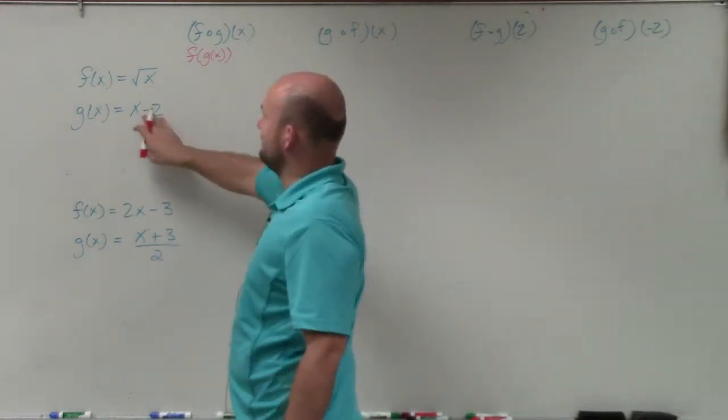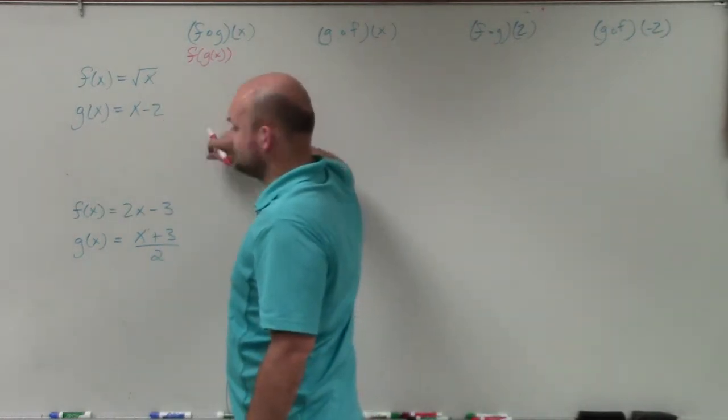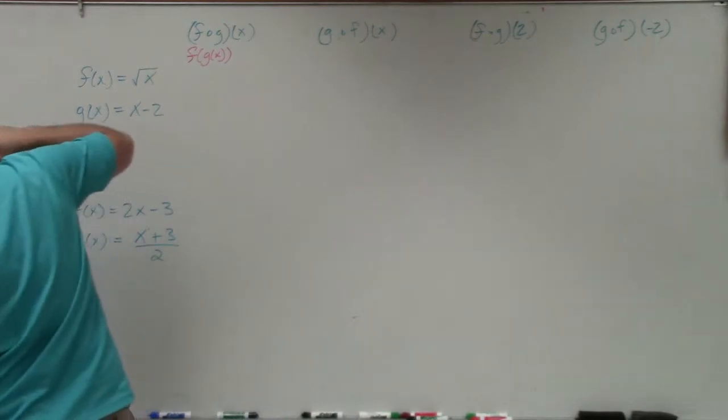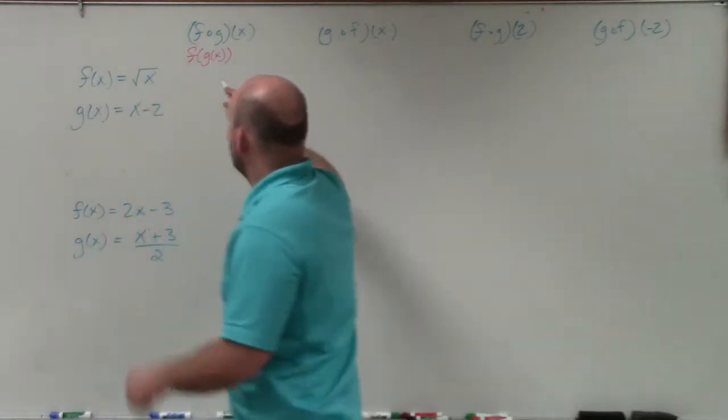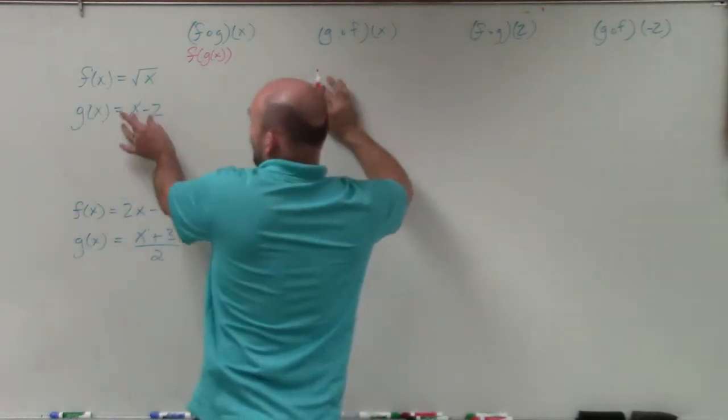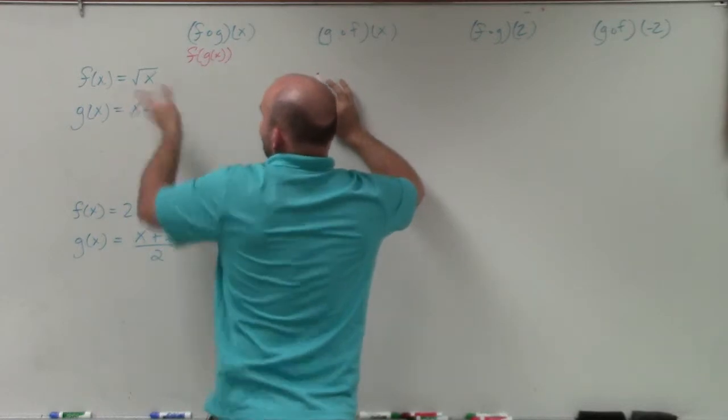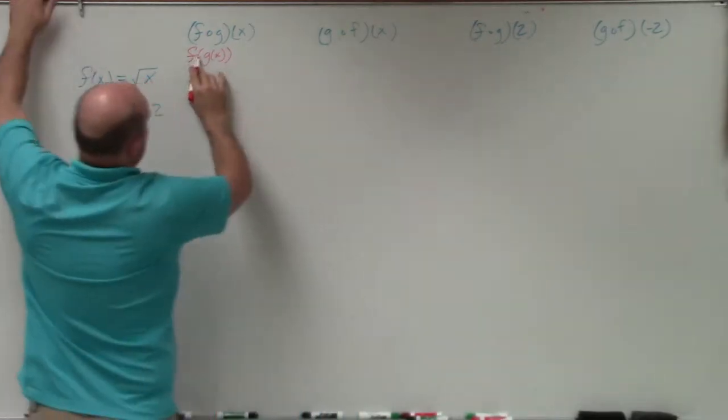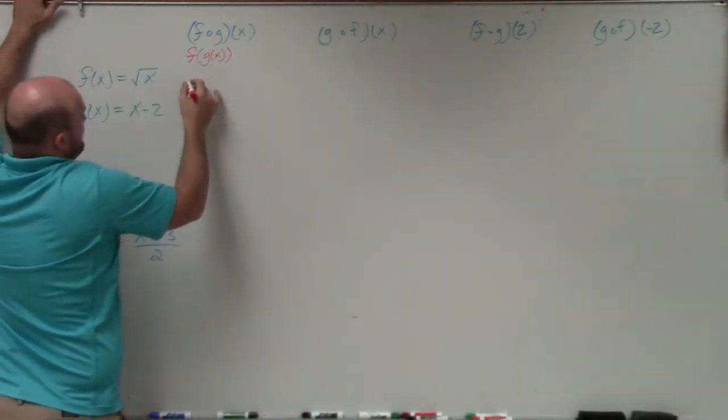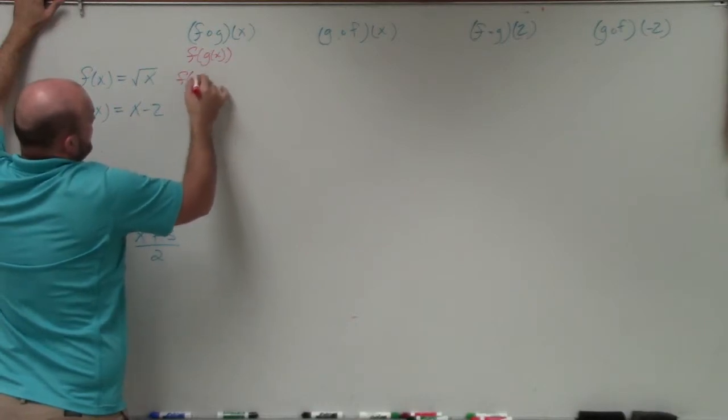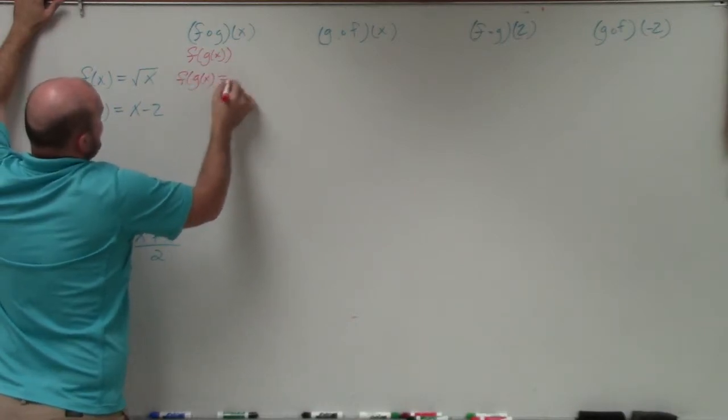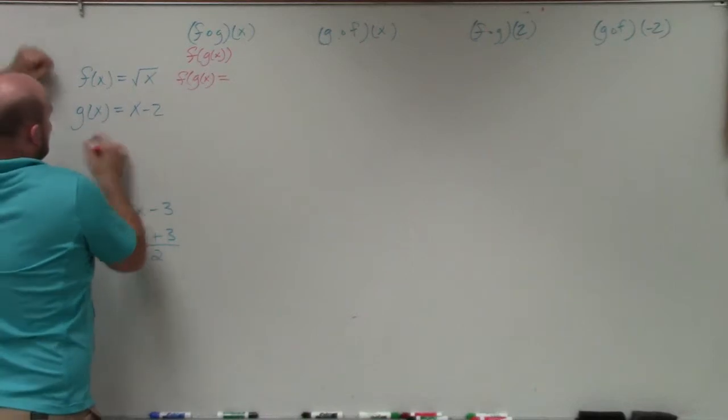So in g of x here, we have x minus 2. We're just going to find this. So therefore, all I'm simply going to do is take whatever g of x is and I'm going to plug—let's go through that. So if I have f of x equals g of x, basically what I'm doing then is f of g of x equals—remember when we did this before, if I had f of 2 equals the square root of x, well then wherever there was an x, I'm going to plug in a 2.